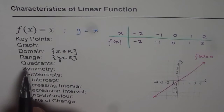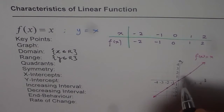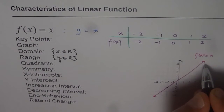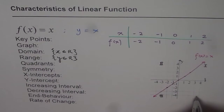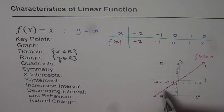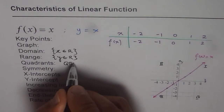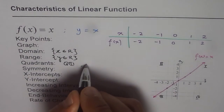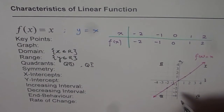Now I will consider the quadrants. When we say quadrants, we mean in which quadrants will this line lie. As you know, this is quadrant 1, this is quadrant 2, here we have quadrant 3, and then quadrant 4. The line actually goes from quadrant 3 to quadrant 1, so we will say quadrant 3 and quadrant 1 — these are the two quadrants in which the line lies.